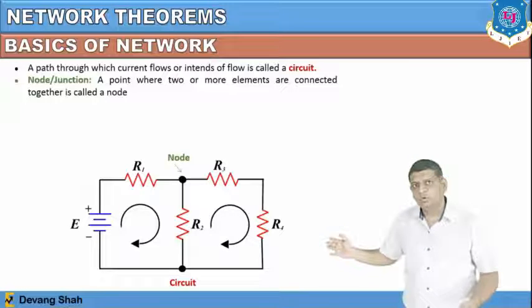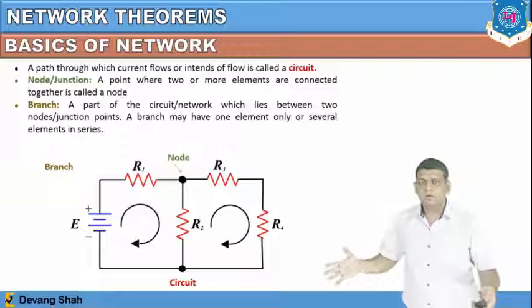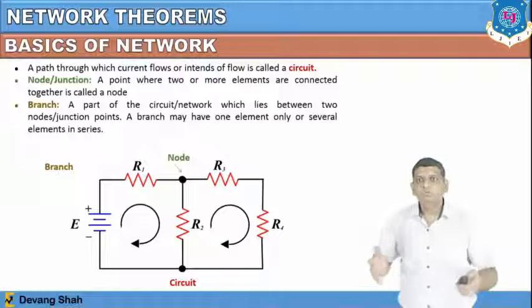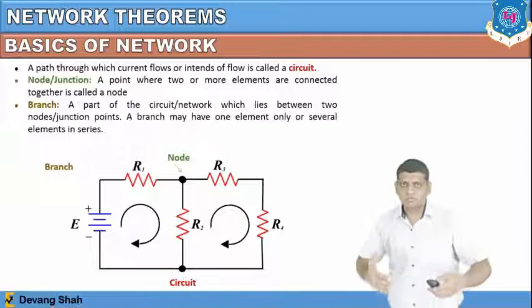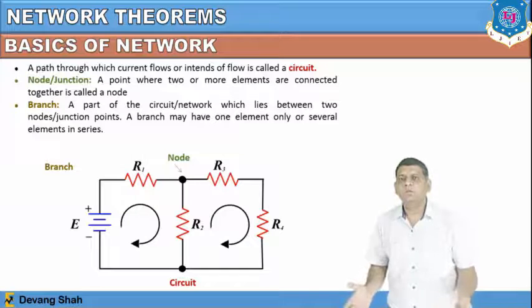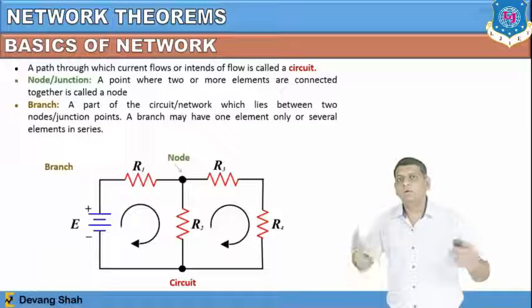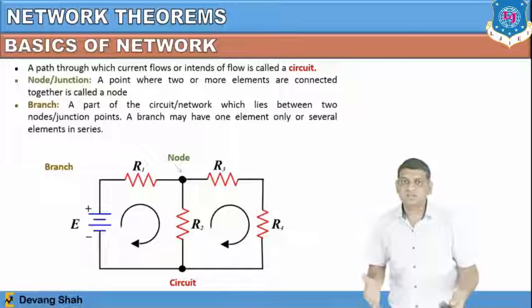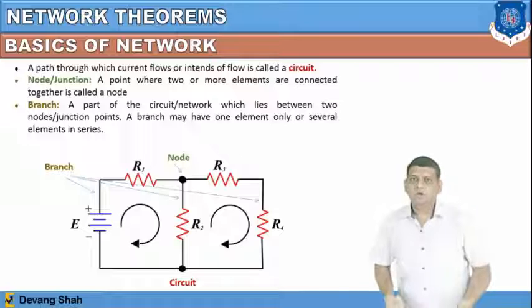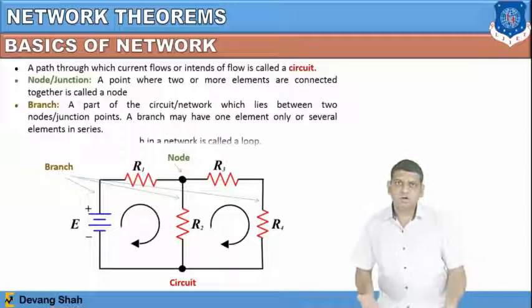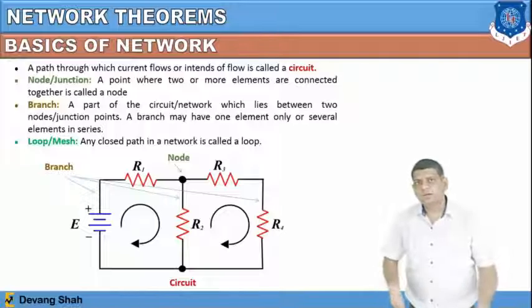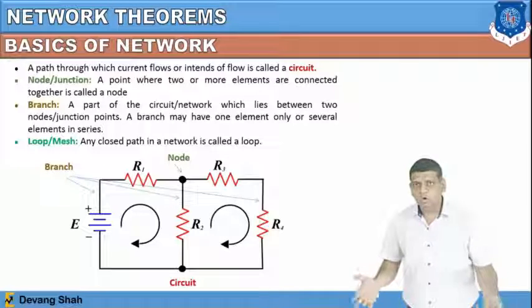A branch is a part of a circuit or network which lies between two nodes or junctions, where any single element or more elements connected in series are present. What is a loop? A closed path in a network or circuit is defined as a loop.